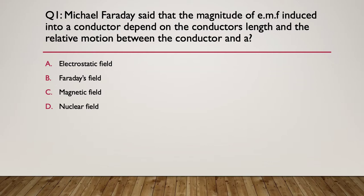Think about how induction works — what does it mean to induce a voltage and a current into a conductor? The answer: Michael Faraday said it is a magnetic field. You need the length of the conductor in the magnetic field and relative motion between the conductor and the magnetic field — move the conductor, move the magnetic field, or move them both, but there must be relative movement to get an induced voltage.